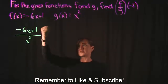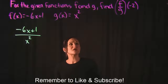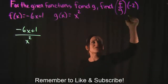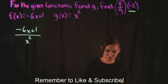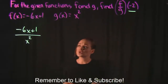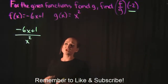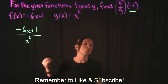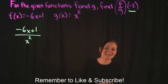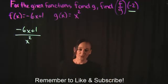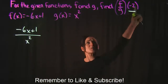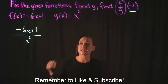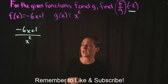But not only did they want us to do this division, they want us to evaluate it at negative 2. So they want us to divide these two functions when x is equal to negative 2, and we're also going to be plugging in negative 2 for x and simplifying.